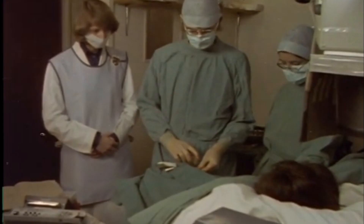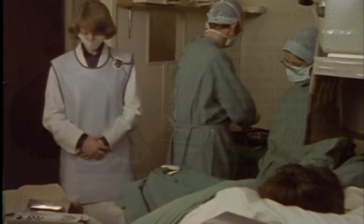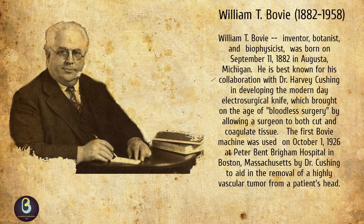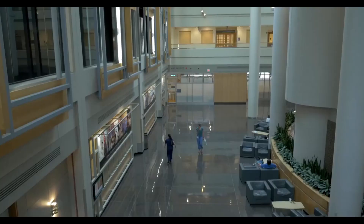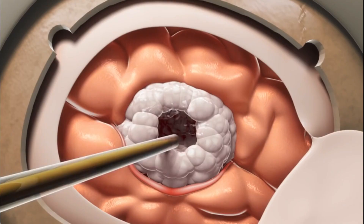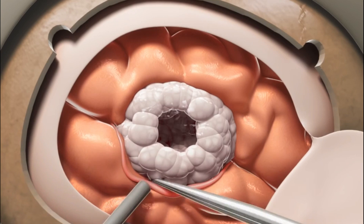Development of the first commercial electrosurgical device is credited to William T. Bovey, who developed the first electrosurgical device while employed at Harvard University. The first use of an electrosurgical generator in an operating room occurred on October 1, 1926, at Peter Bent Brigham Hospital in Boston, Massachusetts. The operation, a removal of a mass from a patient's head, was performed by Harvey Cushing.